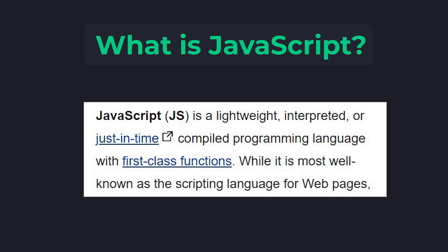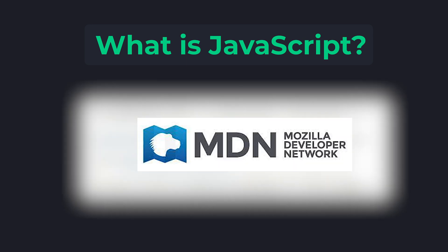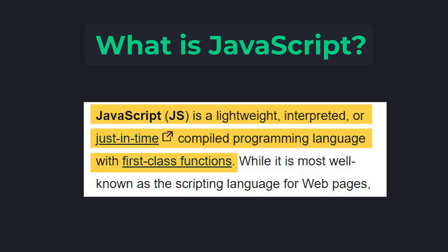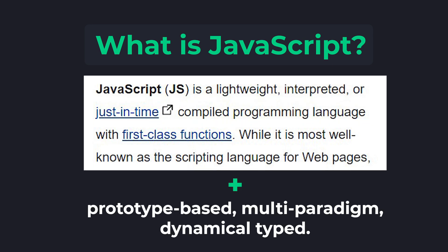Here is the formal definition for JavaScript from MDN official documentation. MDN stands for Mozilla Developer Network — they provide official documentation for JavaScript. I have given the JavaScript guide link in the video description. JavaScript is a lightweight, interpreted or just-in-time compiled programming language with first-class functions. You could also say JavaScript is a prototype-based, multi-paradigm, dynamically typed language.